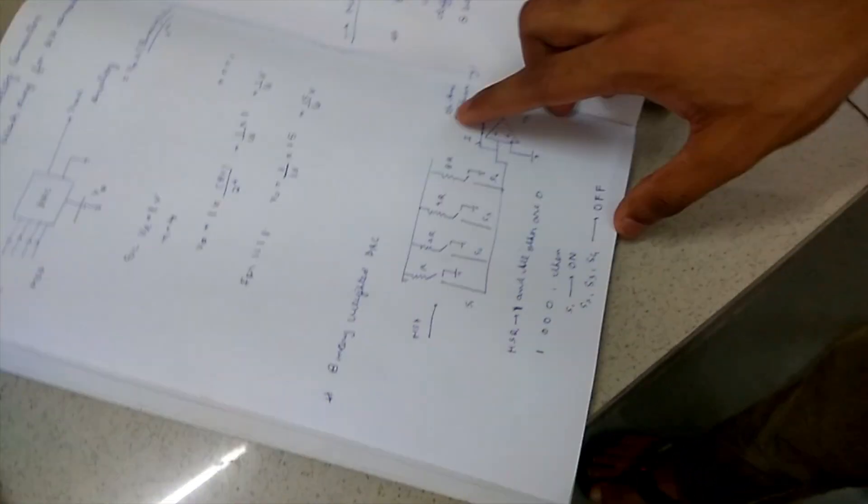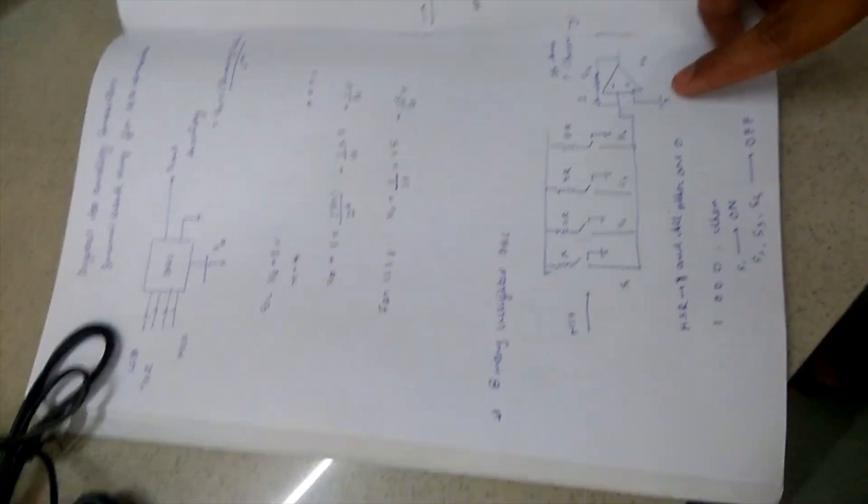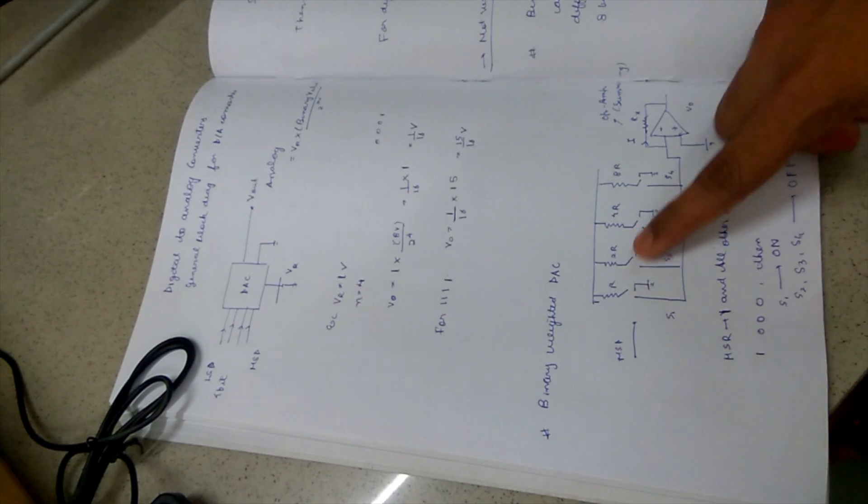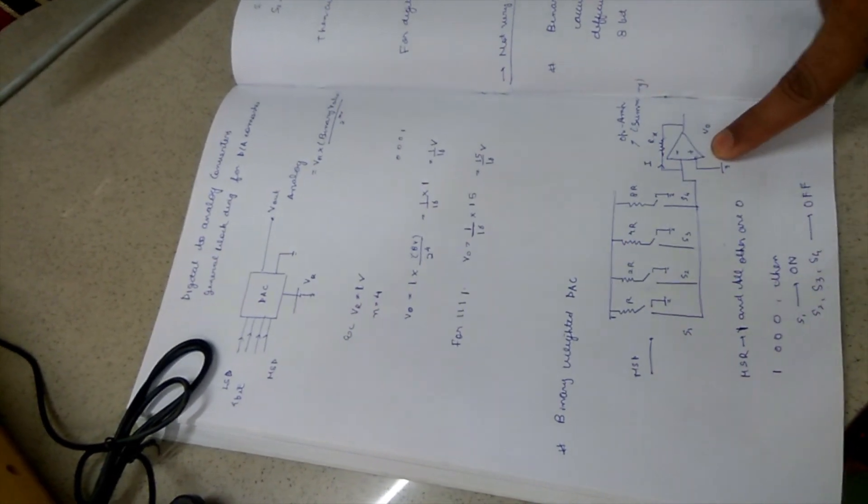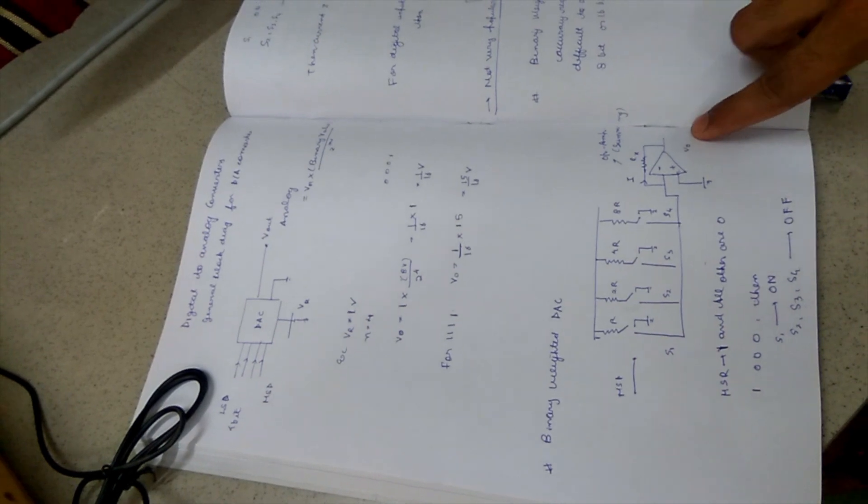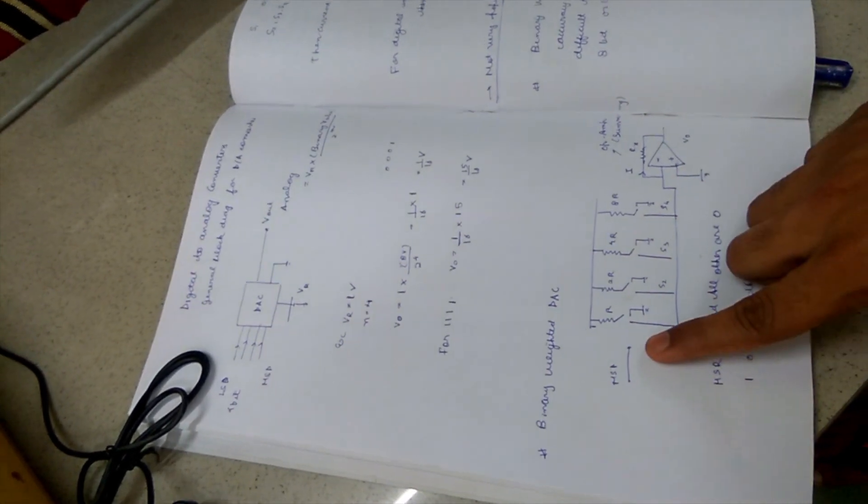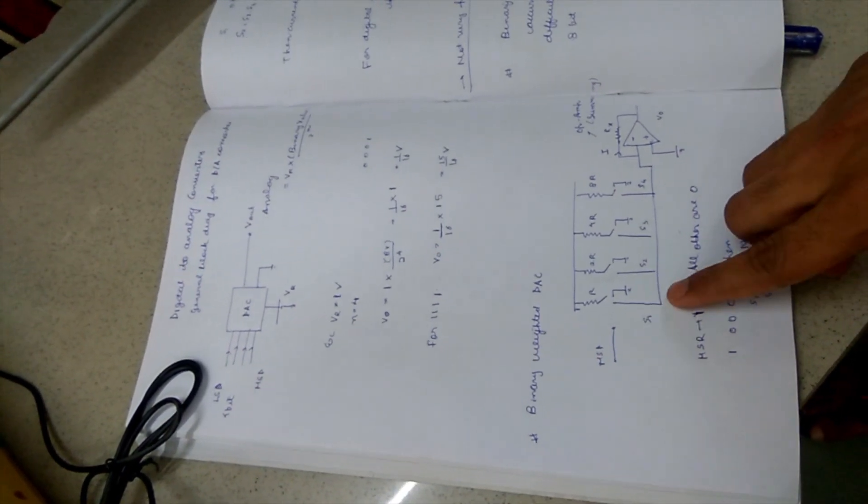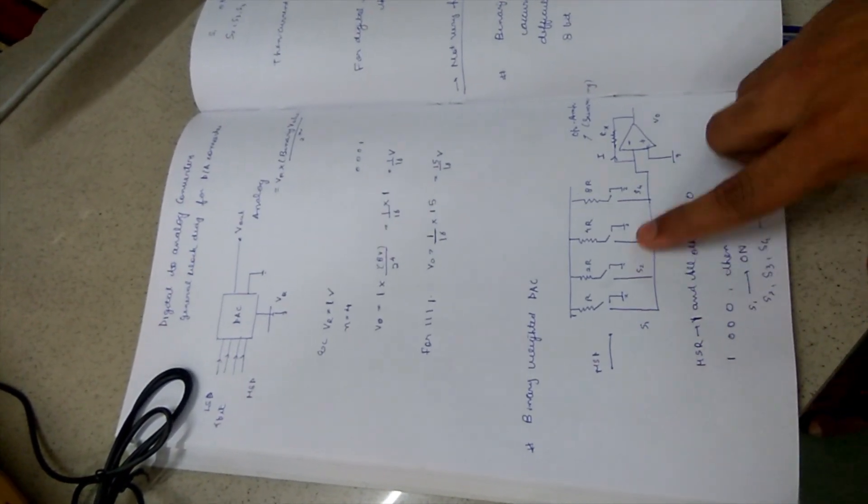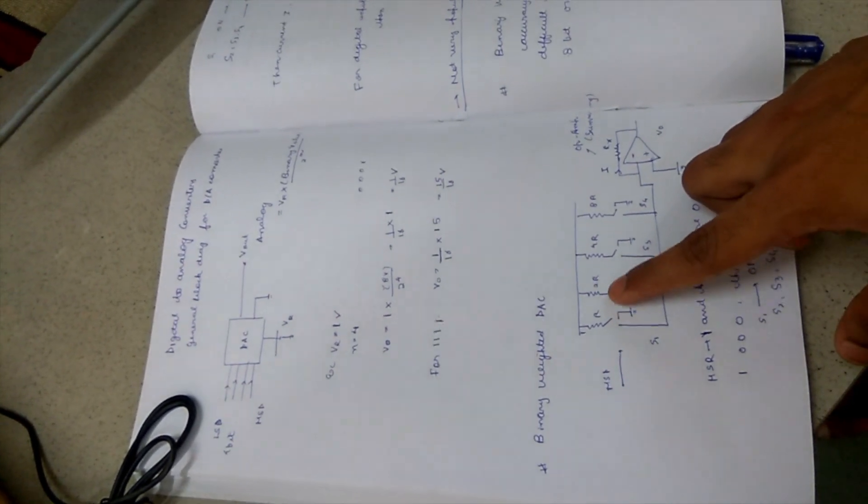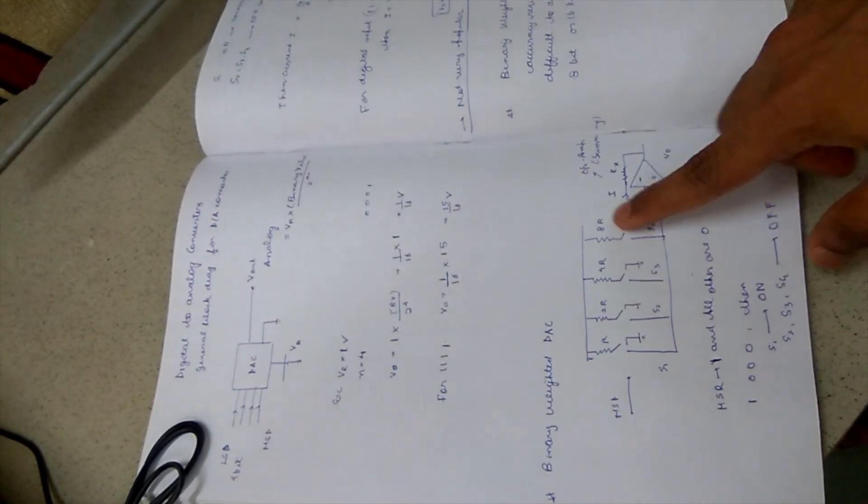In binary-weighted digital-to-analog converter, we have this circuit. This is a normal resistor circuit with an op-amp summing amplifier. We have this digital input. These are the switches S1, S2, S3, S4 and these resistors are in order of R, 2R, 4R and 8R.